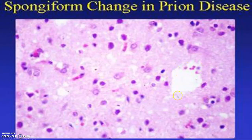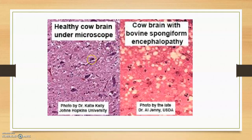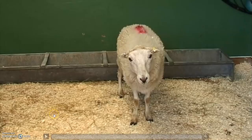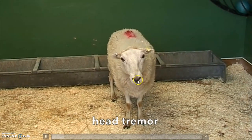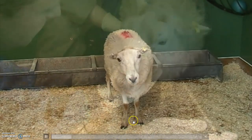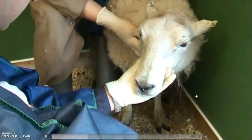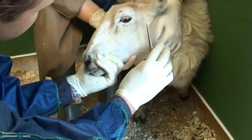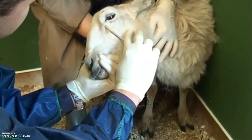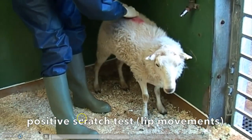Microscopic images show spongiform changes and extensive vacuolation in prion disease. A video of a scrapie-affected animal demonstrates head tremor, minor tremors, loss of sensation, absence of menace response, leap movement, and a positive scratch test.